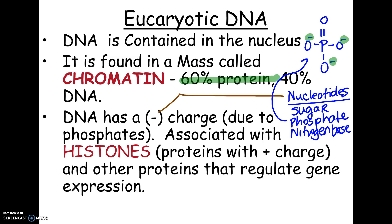The histones look kind of like beads. The DNA, being negatively charged, and the proteins being positively charged — opposites attract. So the DNA actually wraps around these round bead-like histone proteins. The strands of DNA are organized by wrapping around these histones, which keeps the DNA nice and organized so that it doesn't get all tangled and clumped up.